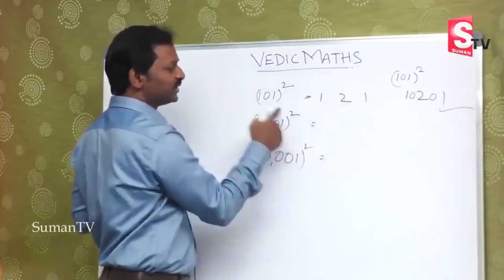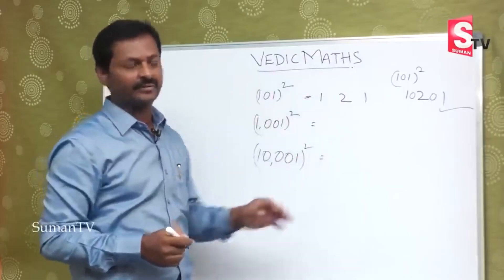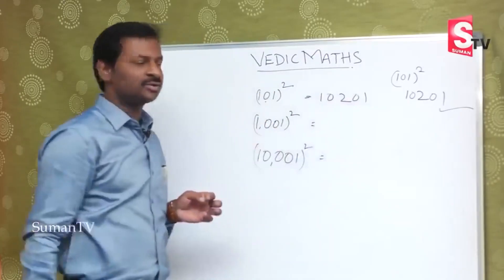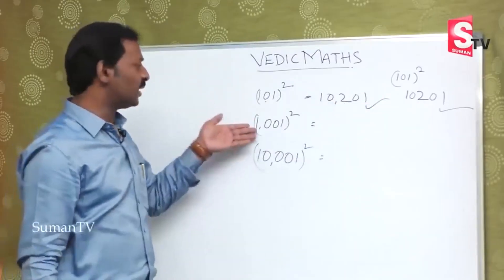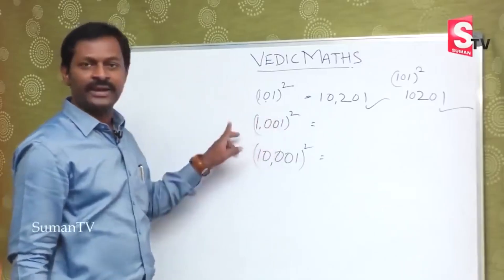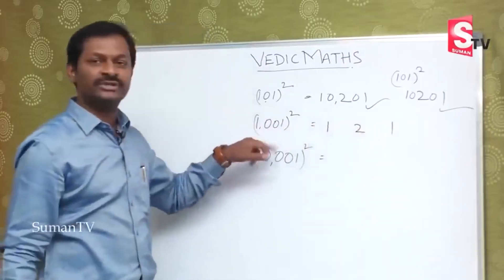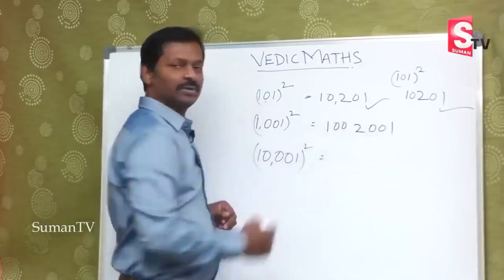1, 2, 1 is the square of 11. 11 square is 121. So in case of 101, put a 0, put a 0. So the answer is 10,201. Next, two zeros are there. If you close these two zeros, again 11. So 11 square is 121. So being two zeros in between, we write 0, 0 and 0, 0.